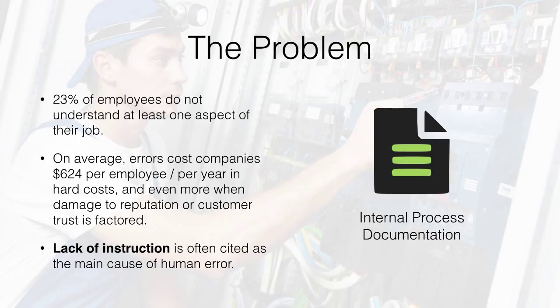23% of employees do not understand at least one aspect of their job – a source of avoidable errors that often gets overlooked. On average, errors will cost a company $624 per employee per year in hard costs, and even more when you consider damage to customer trust. Lack of instruction is cited as the main cause of avoidable human error.